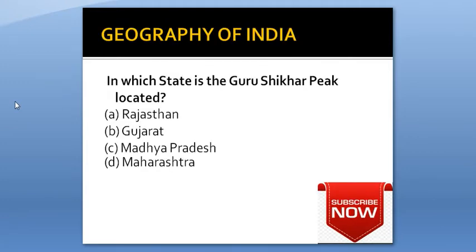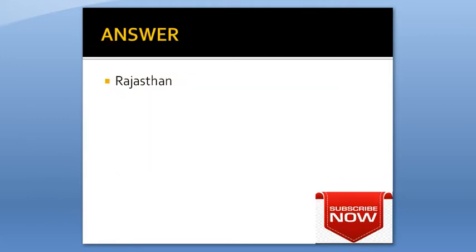In which state is the Gurushikar Peak located? Option A: Rajasthan. Option B: Gujarat. Option C: Madhya Pradesh. Option D: Maharashtra. Answer is Rajasthan.